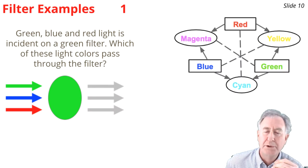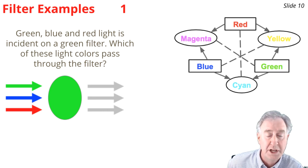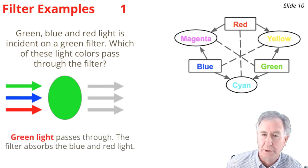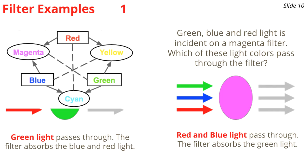Now let's do several examples. First, green, blue, and red light are approaching a green filter — which colors pass through? A green filter absorbs blue and red light and lets only green pass through. In the second example, green, blue, and red light are incident on a magenta filter. Magenta filters let magenta light through, which means red and blue primary colors pass through, while the filter absorbs the green light.